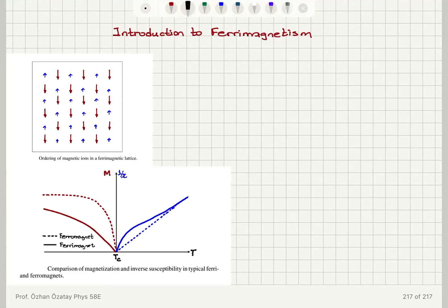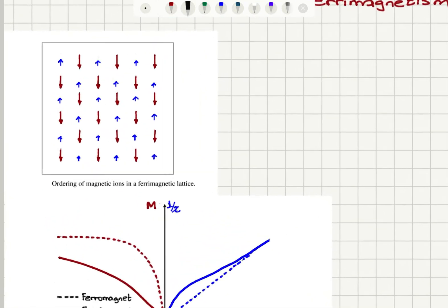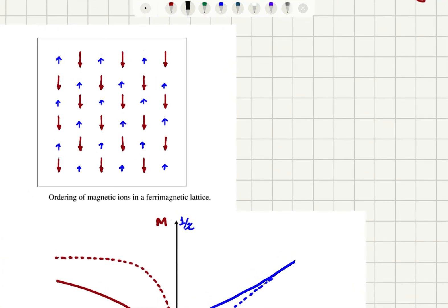We will briefly introduce ferrimagnetism. Ferrimagnets are similar to ferromagnets in the sense that they exhibit spontaneous magnetization below a critical temperature Tc, and we can think of ferrimagnets also as antiferromagnets with not a complete cancellation of the magnetic moments.